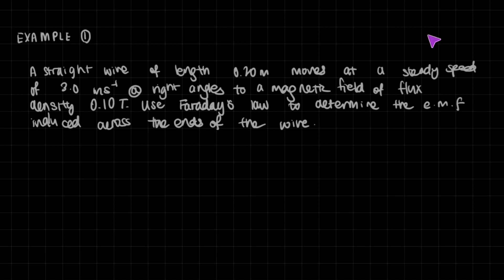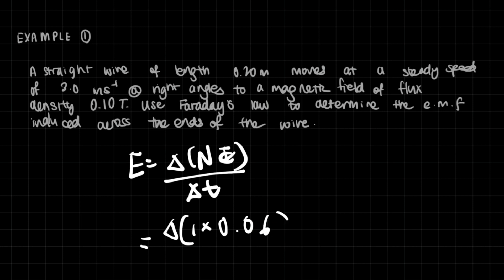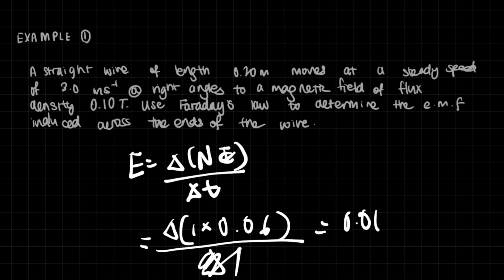Our final calculation: E = ΔNΦ/Δt. With Δt equals one, N equals one, and phi equals 0.06, we get E = 1 × 0.06 / 1, which gives us 0.06 volts. That's the induced EMF. When you use SI units to calculate the voltage, you get the result directly in volts.